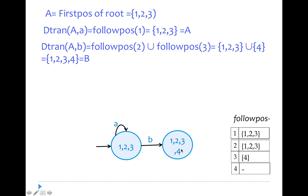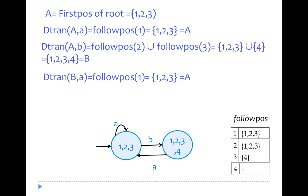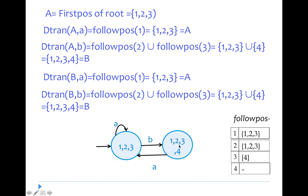From state B = {1, 2, 3, 4}, applying input 'a': only position 1 is for 'a', so we take followpos(1) = {1, 2, 3}, going to state A. Applying input 'b': positions 2 and 3 are for 'b', so followpos(2) ∪ followpos(3) = {1, 2, 3, 4}, remaining in state B. Since state B contains position 4 (the hash/#), it is an accepting state. This completes the DFA construction for the regular expression using follow position.